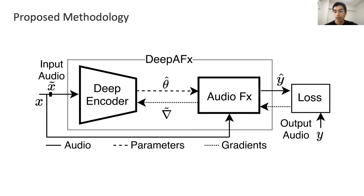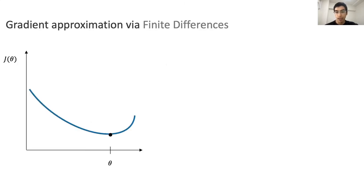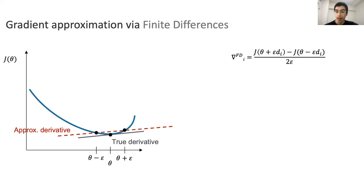This scheme that we are going to use is based on finite differences. To provide some context, gradient approximation via finite differences can be briefly summarized as follows. We have this function f(θ), which through the derivative is at theta. Finite differences is based on the backward and forward measurements of the function perturbed by a constant epsilon. With these measurements, we can approximate the derivative in this manner. And therefore, one component of the gradient vector is defined by this equation.